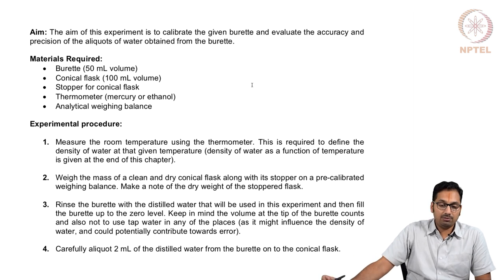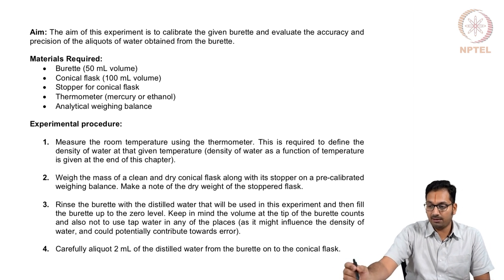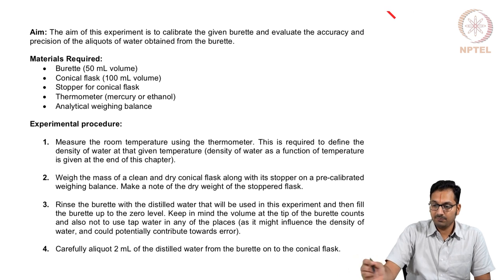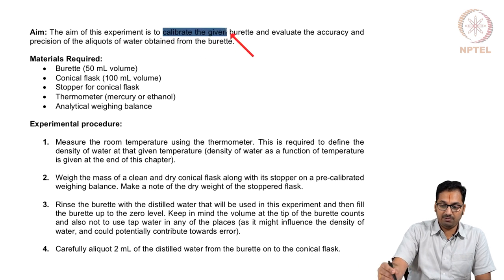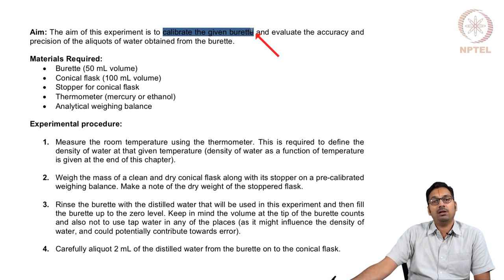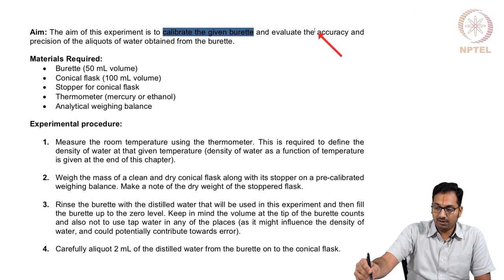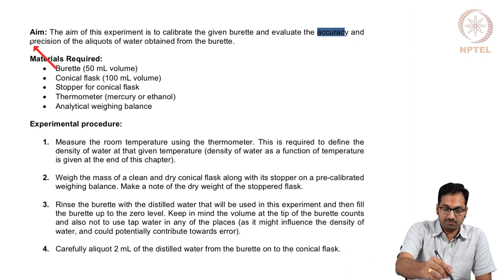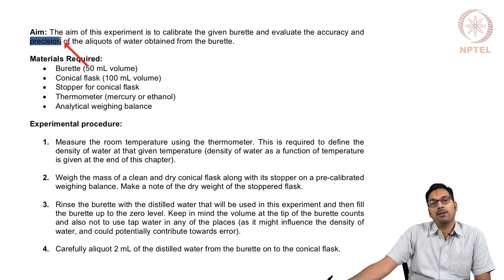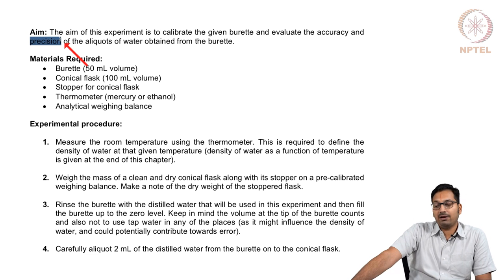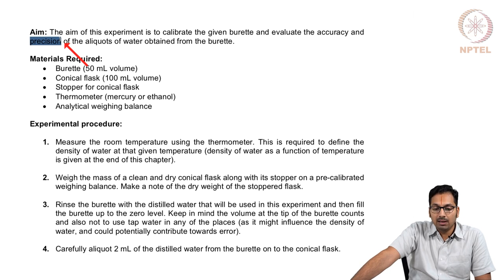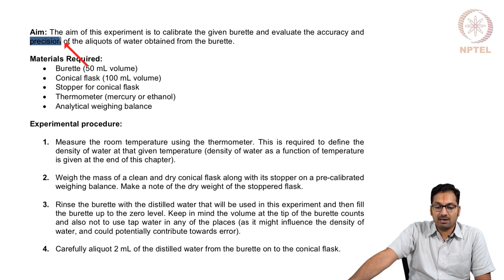The aim of this experiment is to calibrate the given burette. As we all use a burette in many different experiments, I hope this will connect with students listening to this lecture. We will also analyze what is the accuracy and precision for that given burette. Accuracy is the agreement between the sample mean you have gotten with the true value, and precision is how far these measurements deviate from the sample mean.